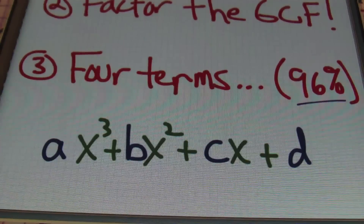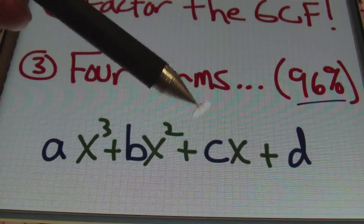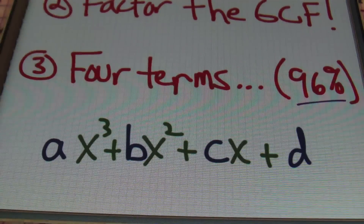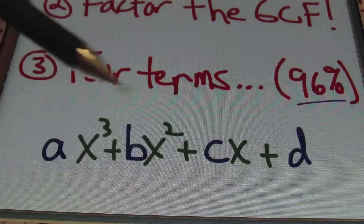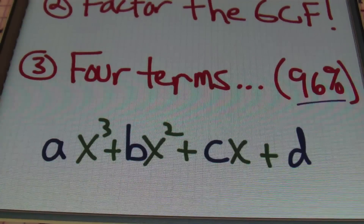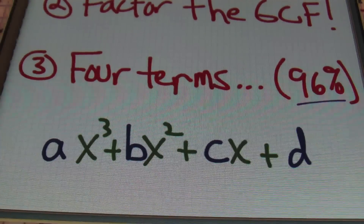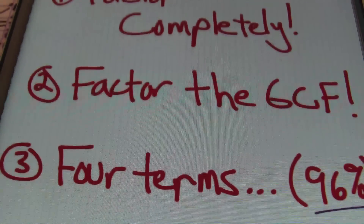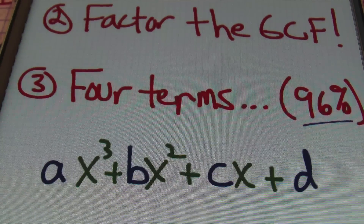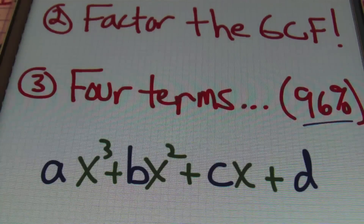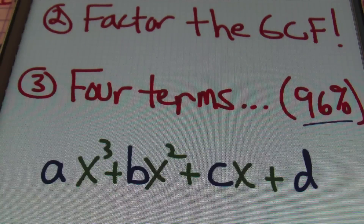So it's not 100% of the time that when you have four terms you can use factoring by grouping. But when presented with four terms, factoring by grouping is definitely one of the first procedures you want to try. It'll be in the form most of the time of AX³ + BX² + CX + D — in descending order of the variable — and you'll recognize it as a candidate for factoring by grouping. About 96% of the time it will work, but definitely try it first.